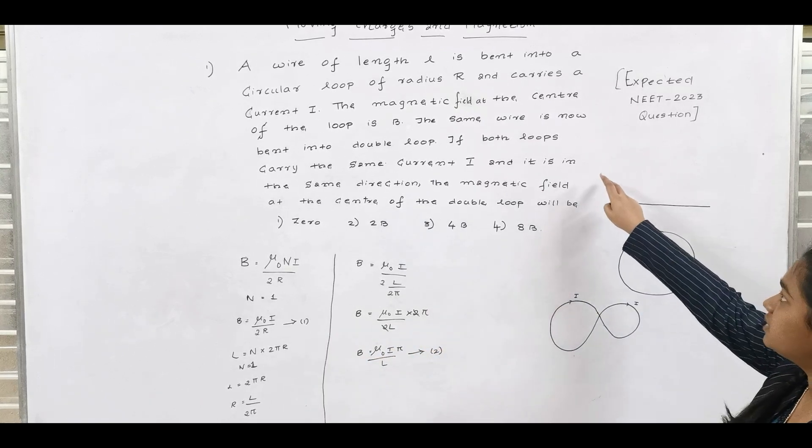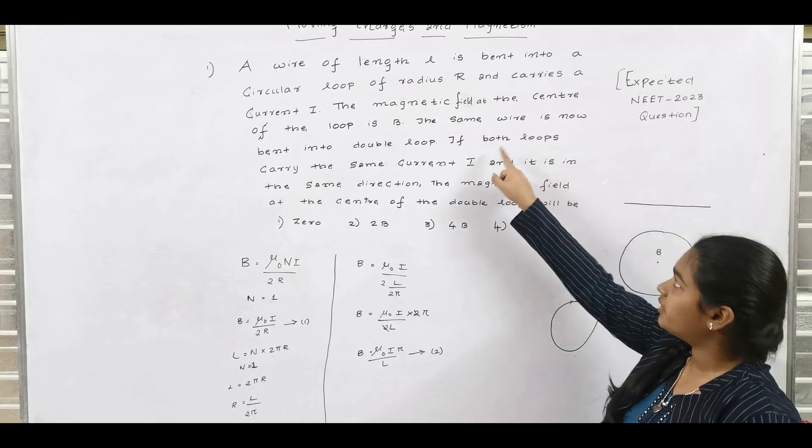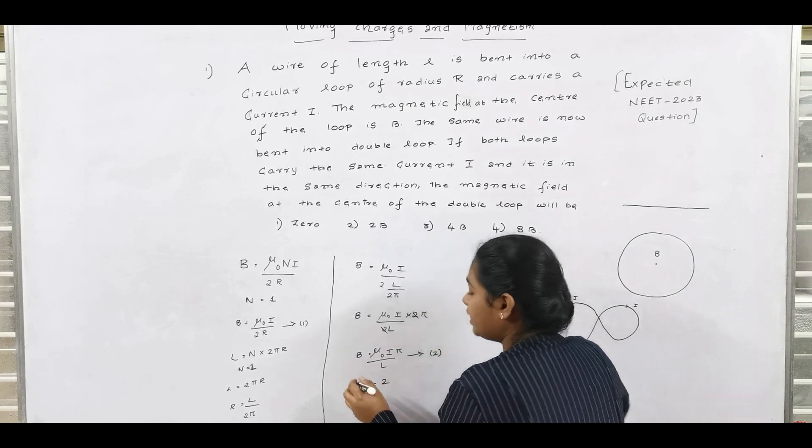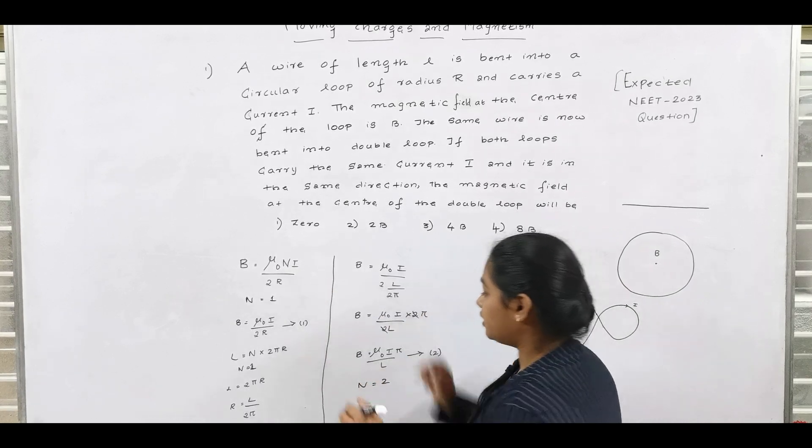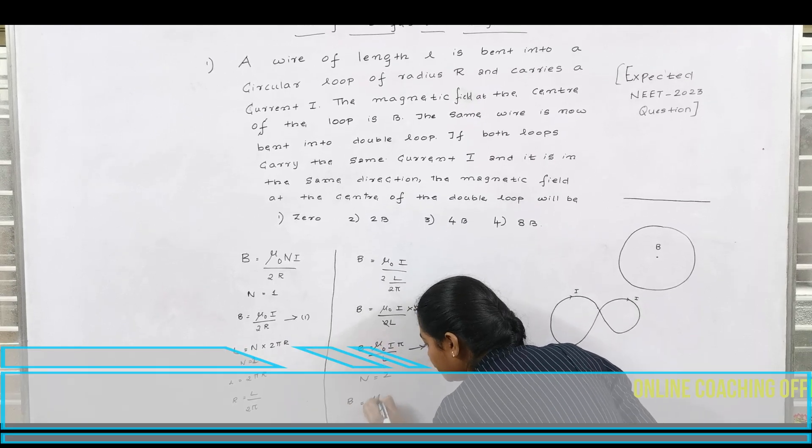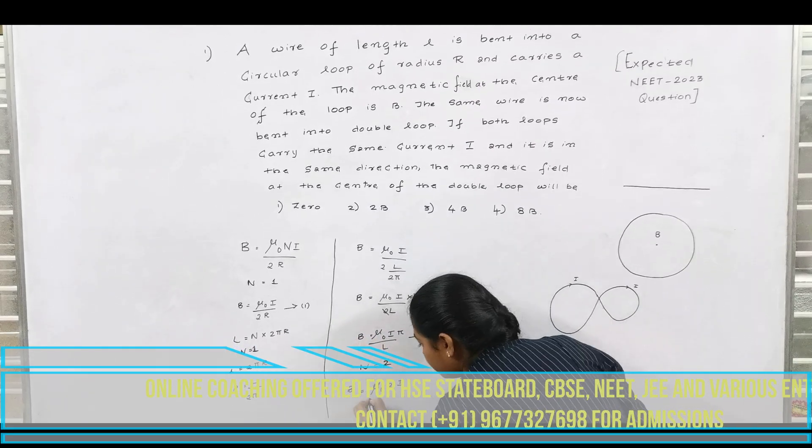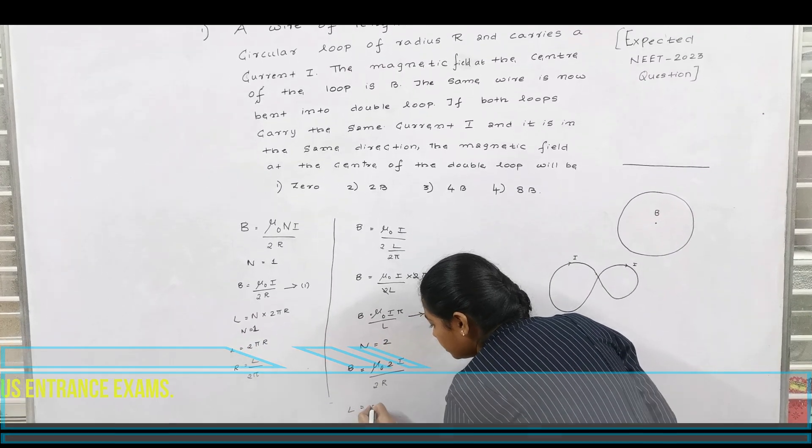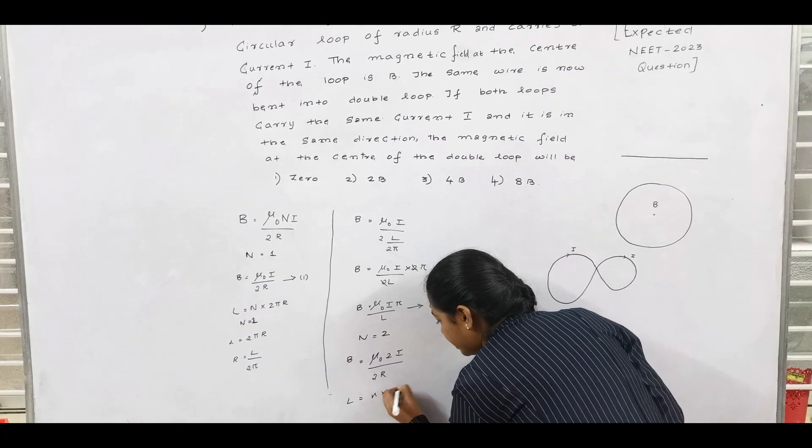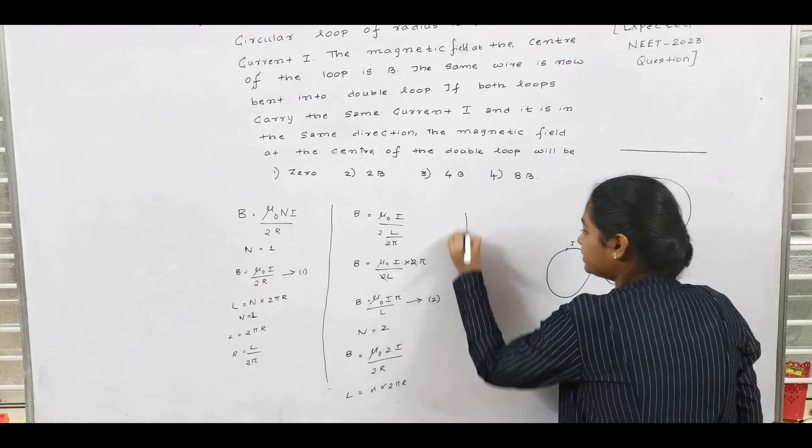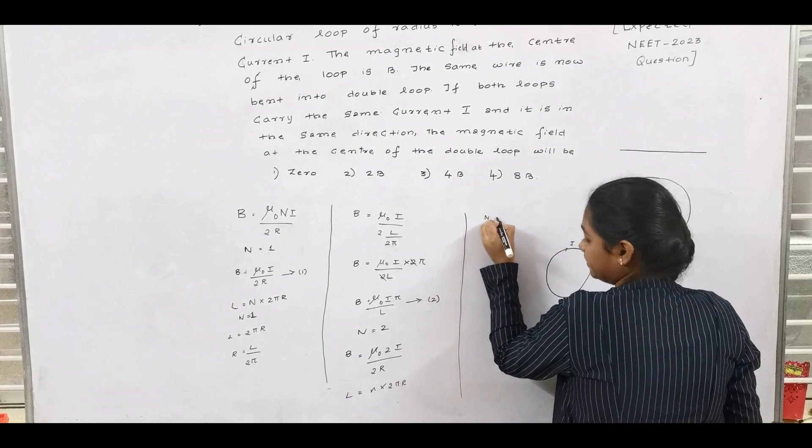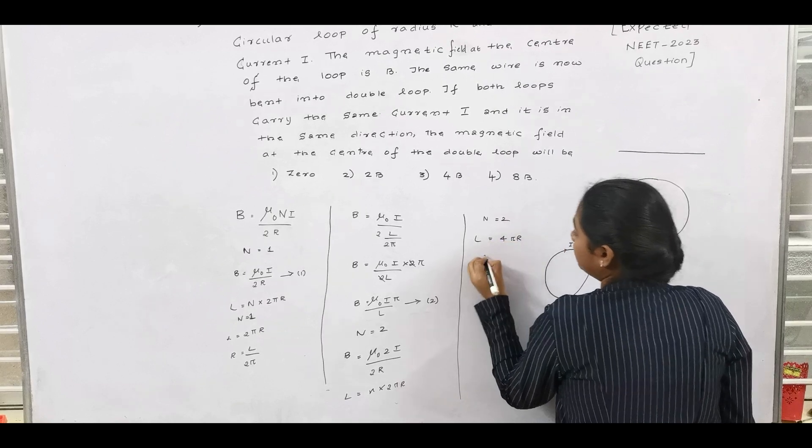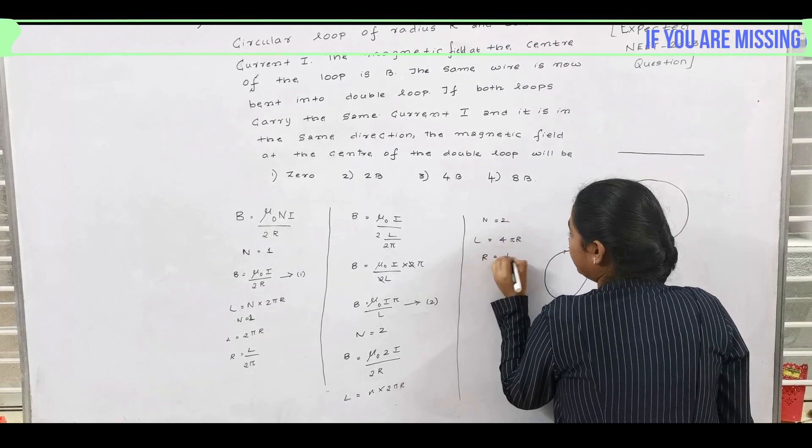So now if you consider the second sum, it is given as the wire is bent into a double loop. So here n is equal to 2. Now again if you substitute this value of n in the given equation, B is equal to mu naught 2i by 2r. Here for L, now L is equal to n into 2 pi r. Here the given value of n is equal to 2. So we get L is equal to 4 pi r.